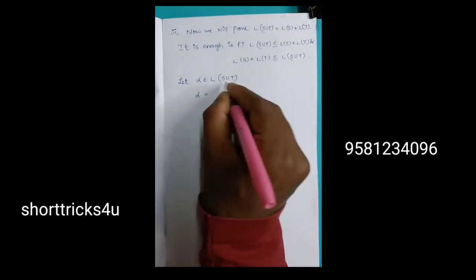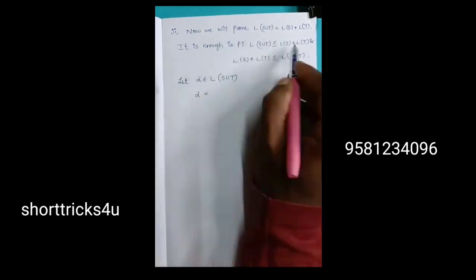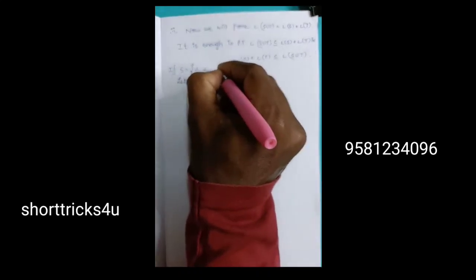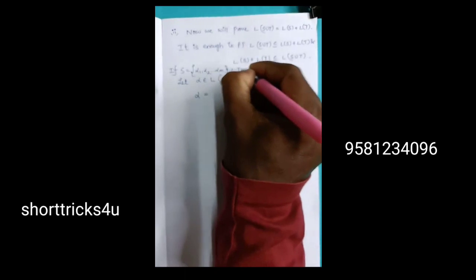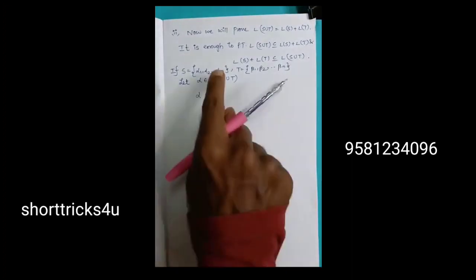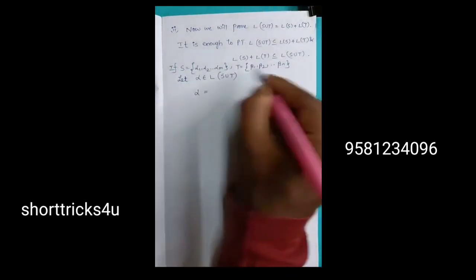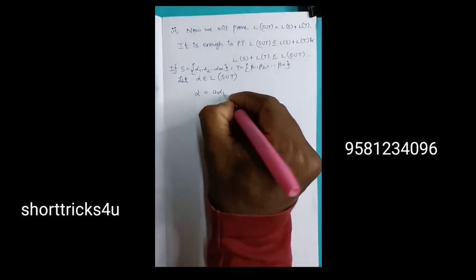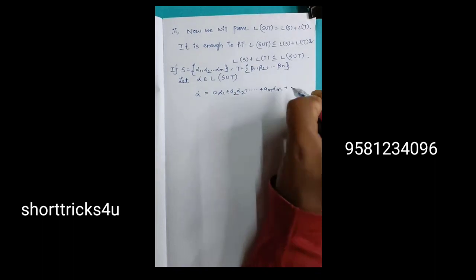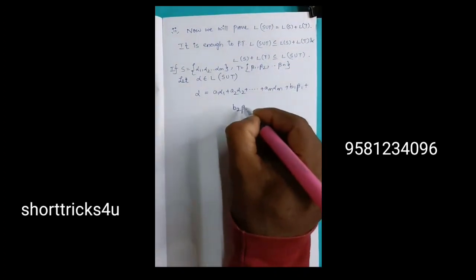If alpha belongs and equals a linear combination of S and T — if you have S, consider elements Alpha1, Alpha2, so on, Alpha M. For T consider Beta1, Beta2, so on, Beta N. For S union T, a linear combination would be A1·Alpha1 + A2·Alpha2 + ... plus B1·Beta1 + B2·Beta2 and so on.